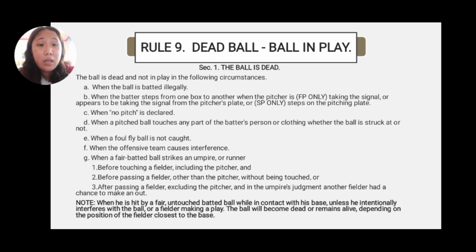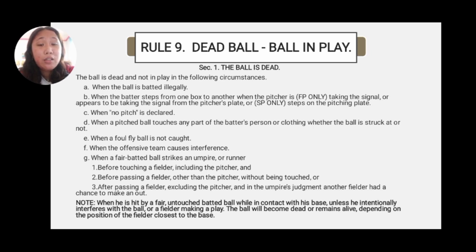There are three situations included here. Number 1, before touching a fielder, including the pitcher. Number 2, before passing a fielder other than the pitcher without being touched. Or number 3, after passing the fielder, excluding the pitcher, and in the umpire's judgment another fielder had a chance to make an out. Note: when a runner is hit by a fair untouched batted ball while in contact with his base, unless he intentionally interferes with the ball or a fielder making a play, the ball becomes dead or remains alive depending on the position of the fielder closest to the base.